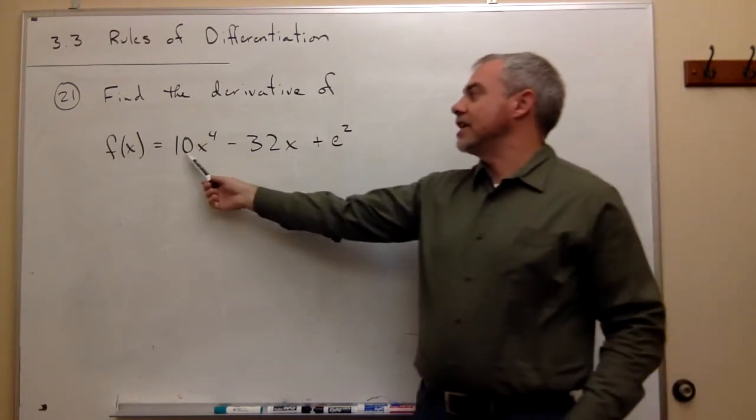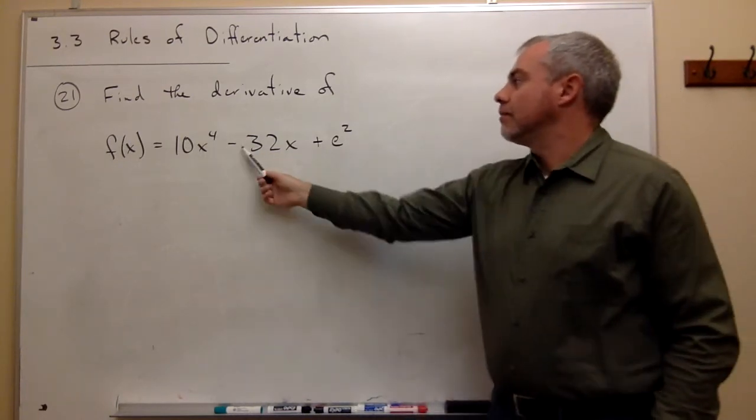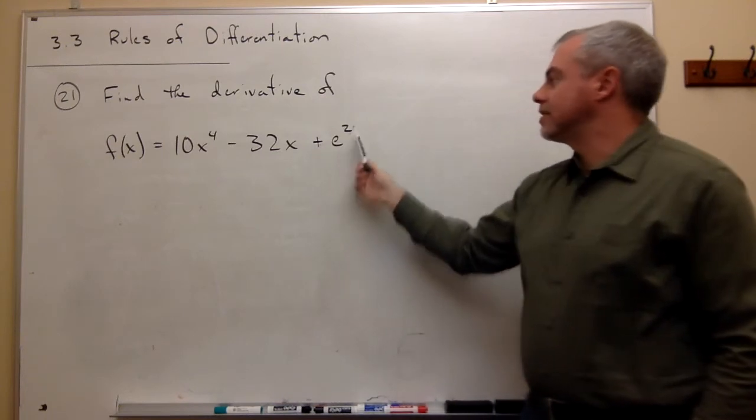F of x equals 10x to the fourth minus 32x plus e squared.